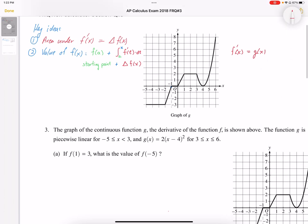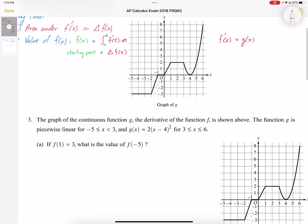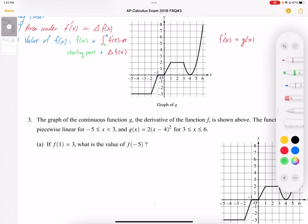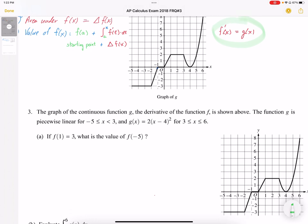So taking a look at number 3, it says the graph of the continuous function g is the derivative of f. So that establishes this point here in that g is f'. The function g is a piecewise linear function, so we have a bunch of straight line pieces from negative 5 to 3, and from 3 to 6 it is a parabola, and the parabola function is 2x minus 4 squared.